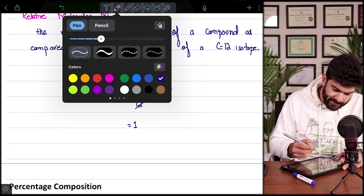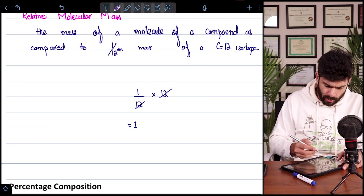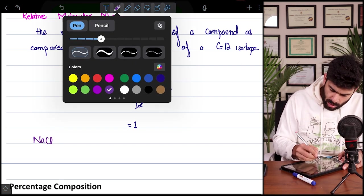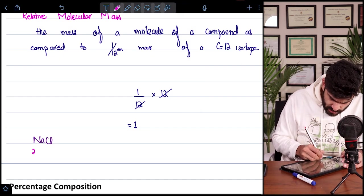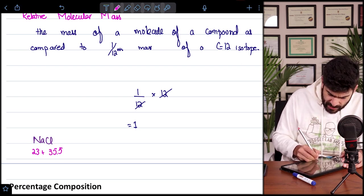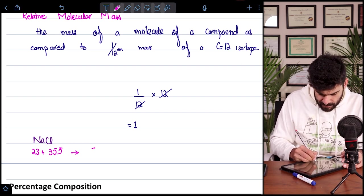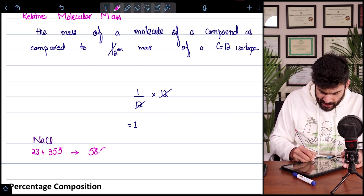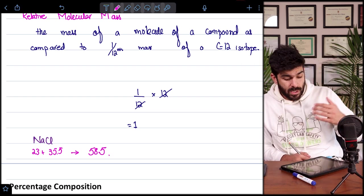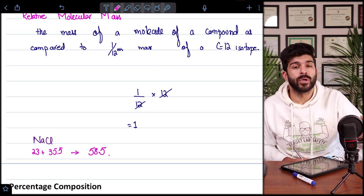And if we have to calculate the relative molecular mass of any compound, call it NaCl. We know, we just discussed that sodium is 23 and Cl as per the periodic table is 35.5. So the answer would be 58.5, which is the relative molecular mass of sodium chloride.